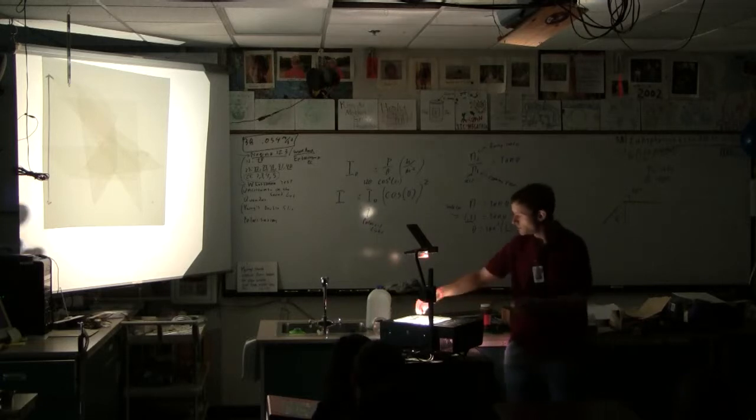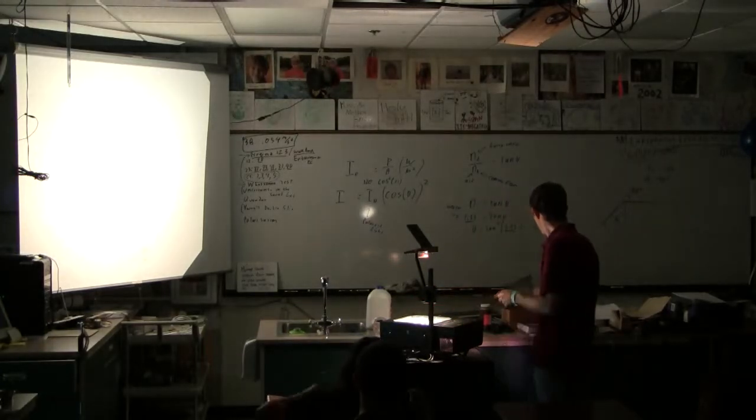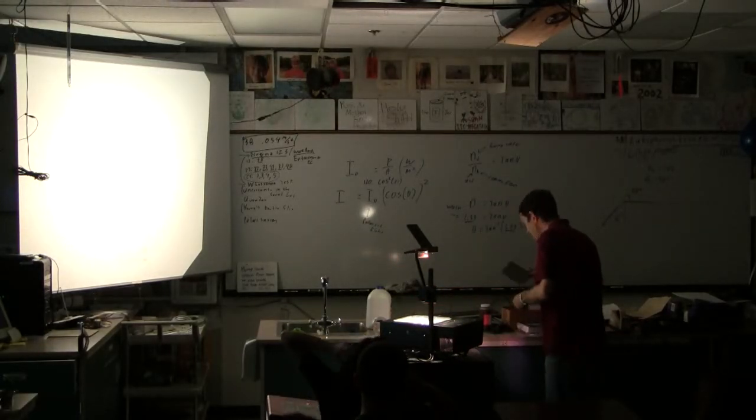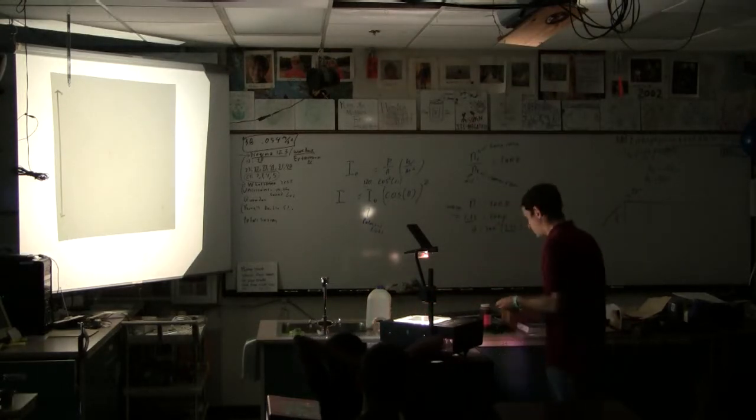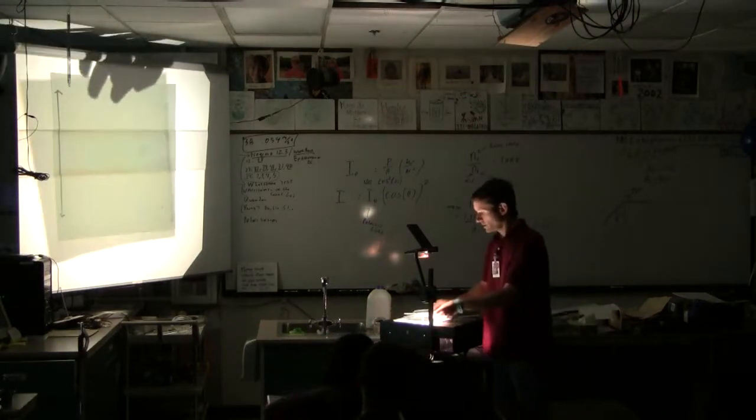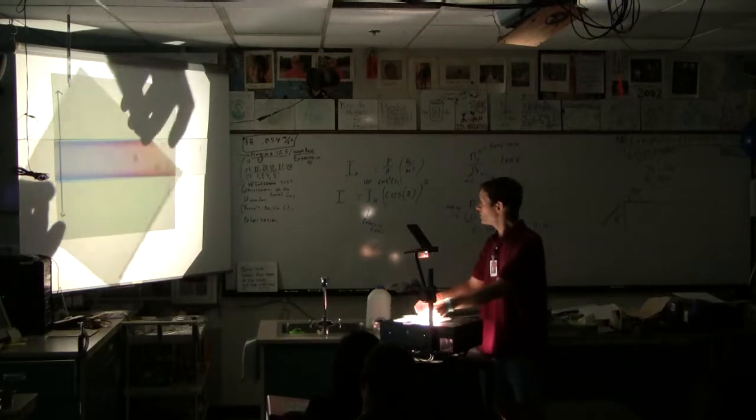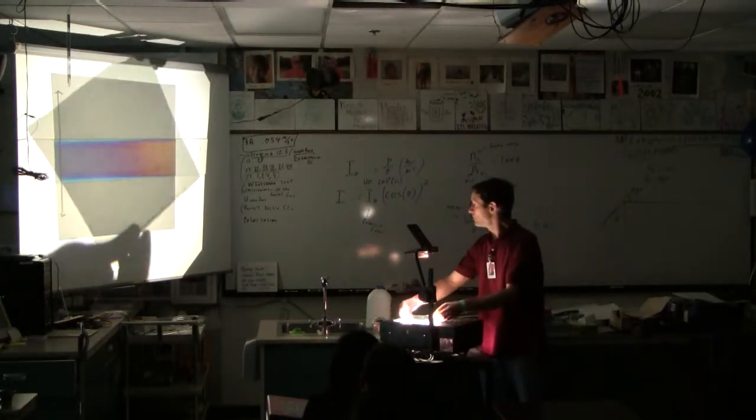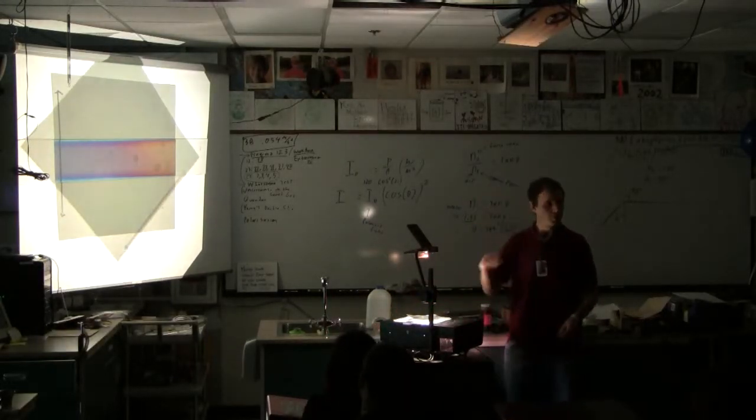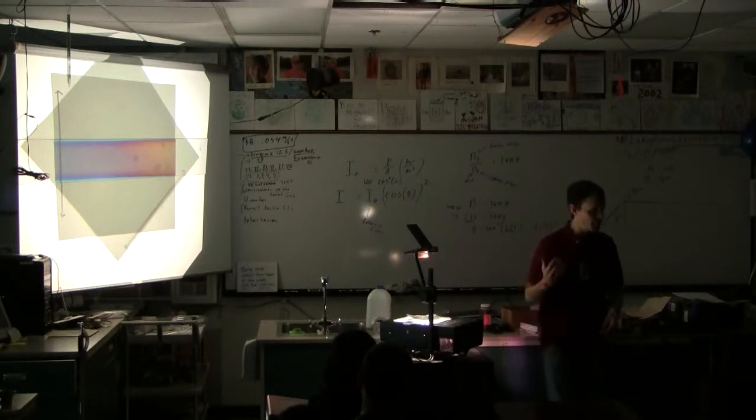The second coolest thing about this is that the plane of polarization actually can be affected by stress. So if I take this thing like this, the first thing you can notice is that if I turn this, it's very pretty. And you can see this is actually a piece of bulletproof glass. It's called Lexan.